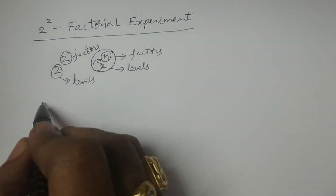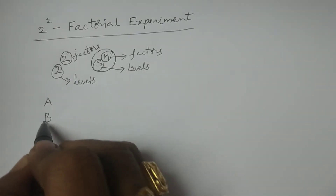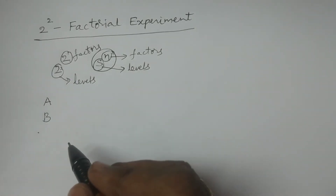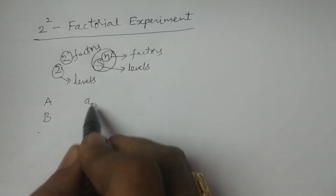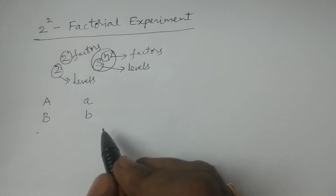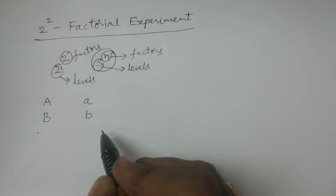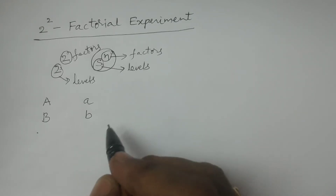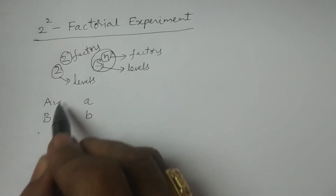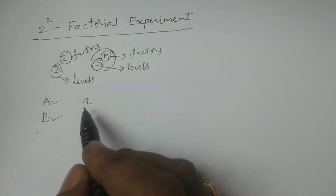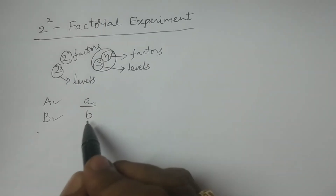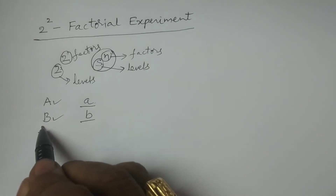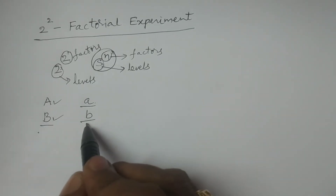For example, consider capital A and capital B are 2 factors in the experiment. Small a and small b indicate the 2nd level corresponding to the factors A and B. If you want to indicate the 2nd level of factor A, we write small a; for the 2nd level of factor B, we write small b.